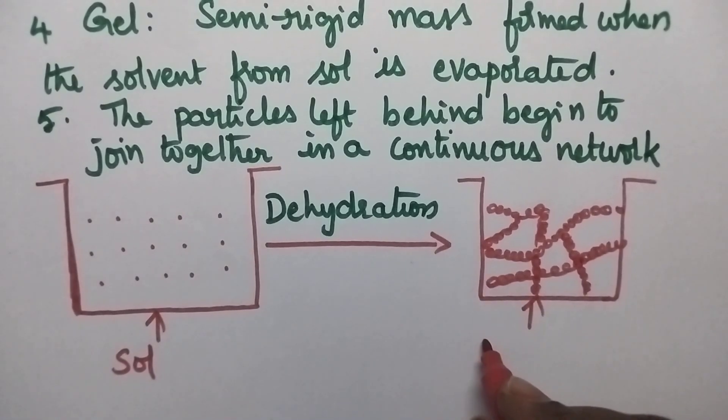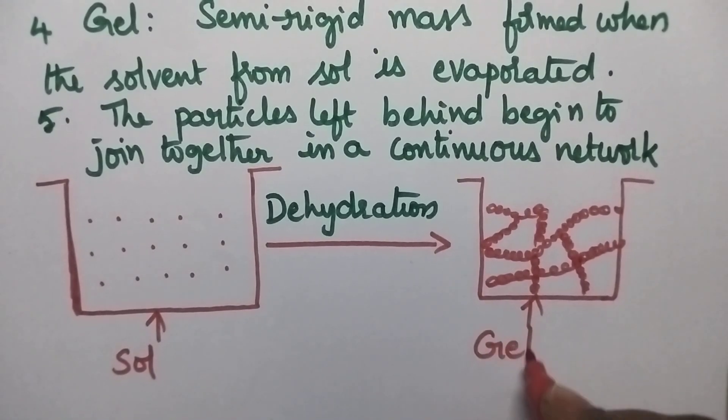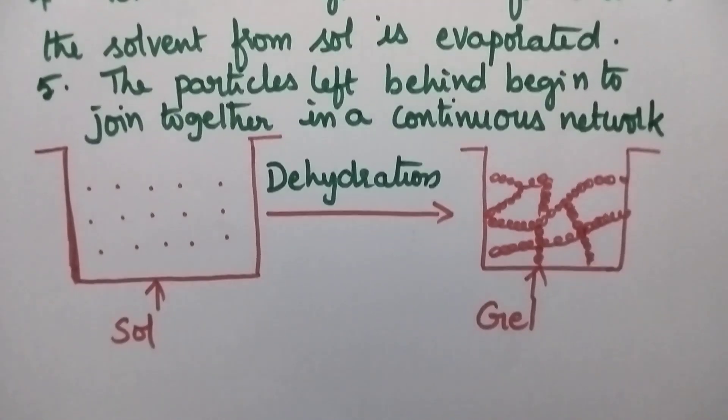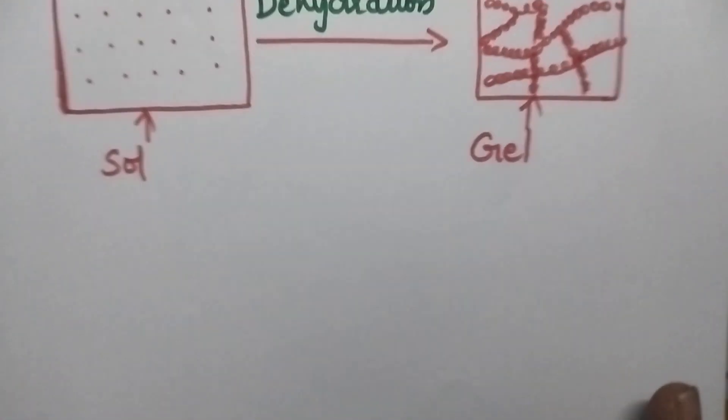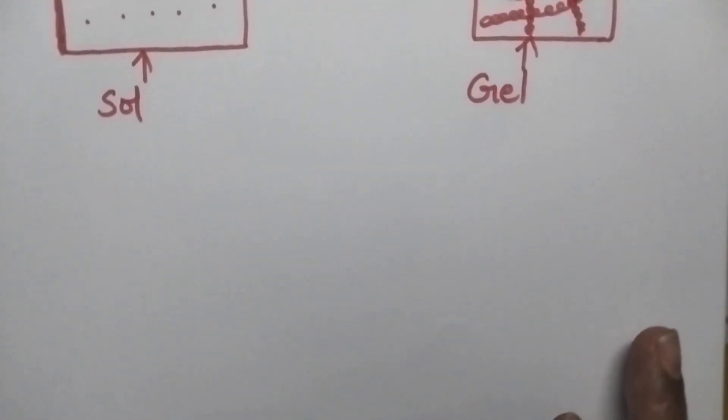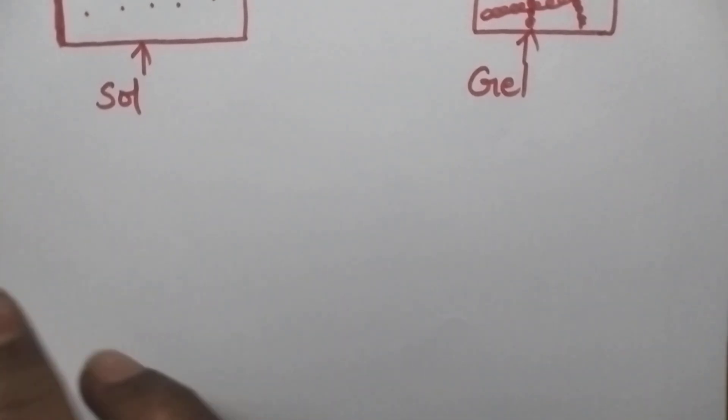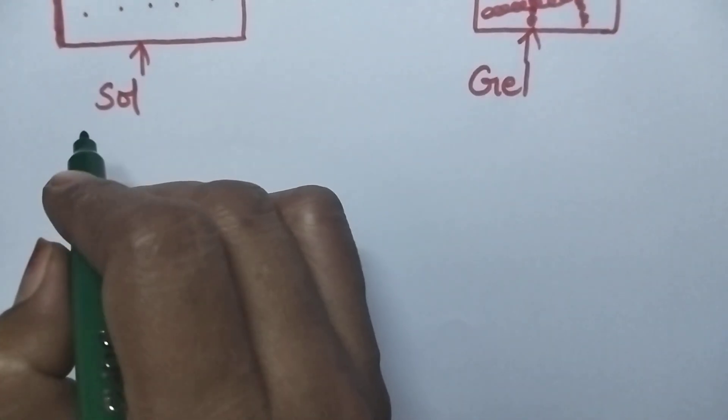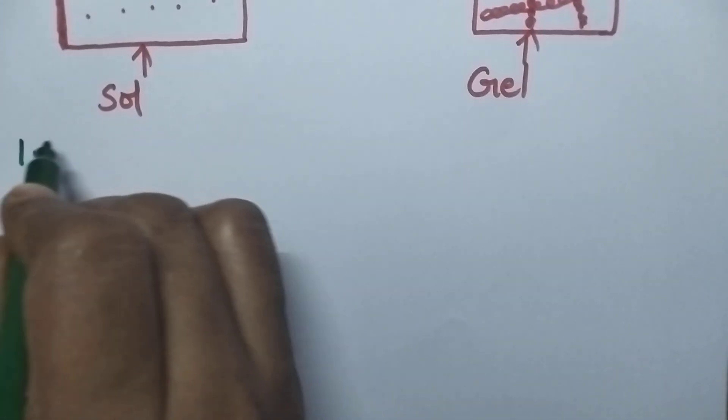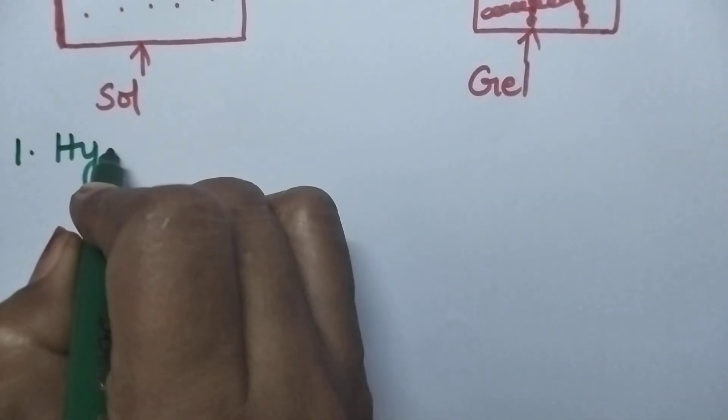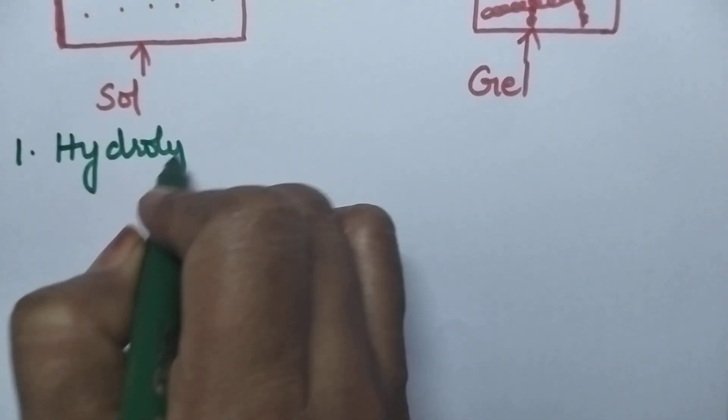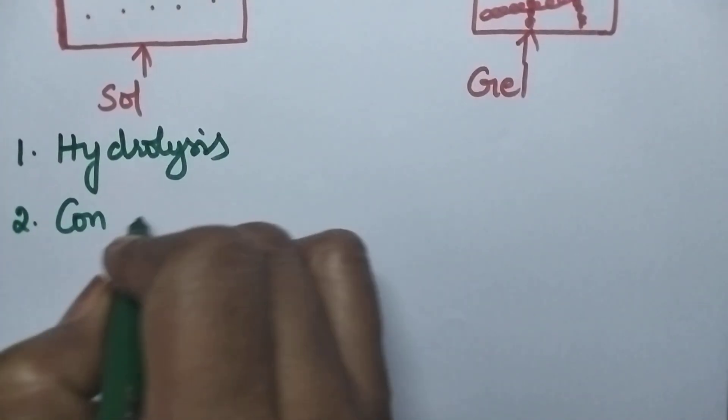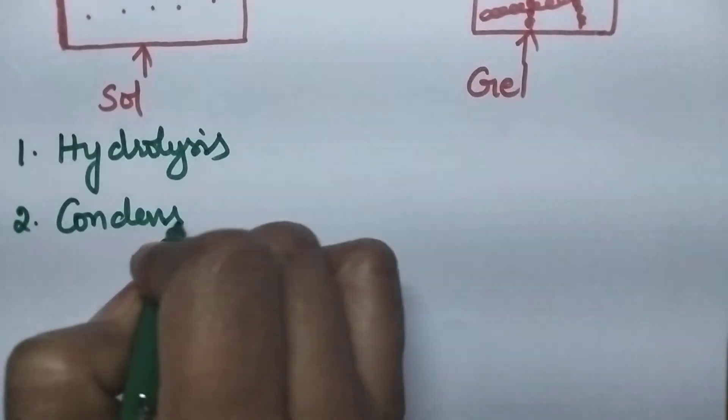So in this way by the evaporation of the solvent it results as a gel. Let us see what type of chemical changes takes place during the conversion of a colloidal solution into a Gel. Especially Sol Gel method is a chemical technique which involves two steps. First step being hydrolysis followed by condensation process.